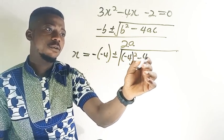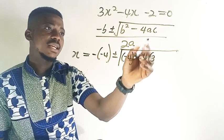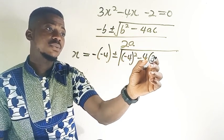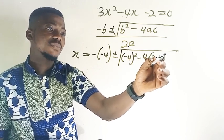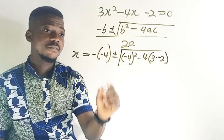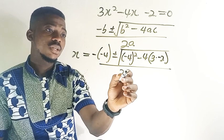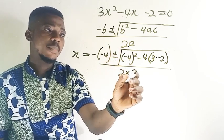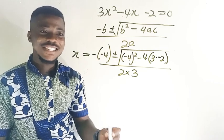Minus 4, now a is 3, so 3 times c. So let me put a pointer times c, c is minus 2. So that's what you're going to have all over 2 times a, a is 3. So we are doing with that. Let's move on.